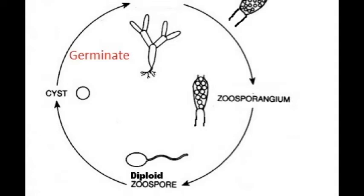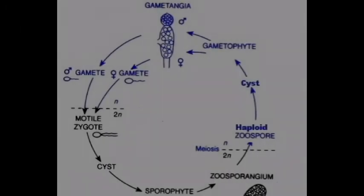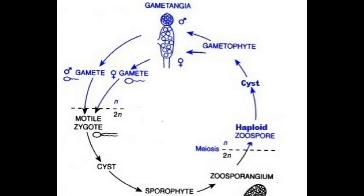Now let's take a look at sexual reproduction. Sexual reproduction depends on two alternating life stages. Alternating generations will go through a sporophyte and a gametophyte phase. The sporophyte phase is the diploid phase, and the gametophyte phase is the haploid phase.